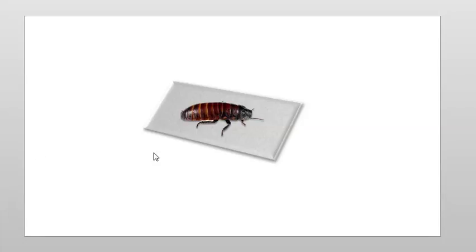Let's say that you have this, and let's look at the forces. Let's say it's just static, meaning it's still, not moving. So let's draw a free body diagram of this roach. I'm going to find the roach's center of mass, just kind of like the middle of the roach. It's always best to do this as a dot.